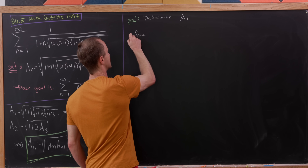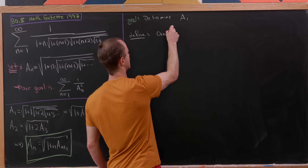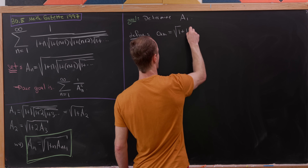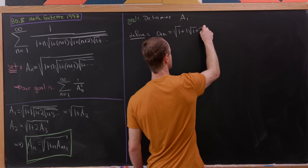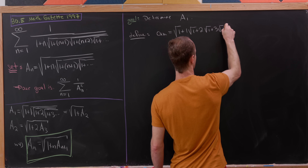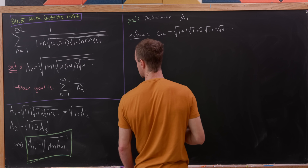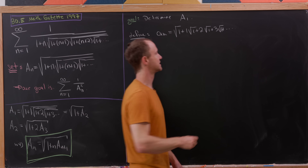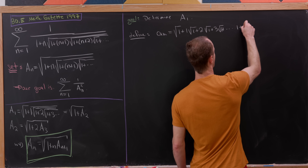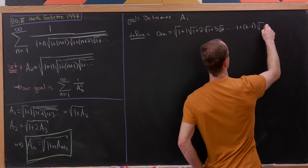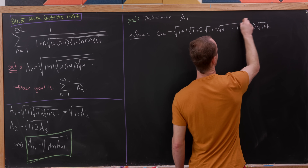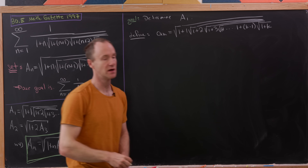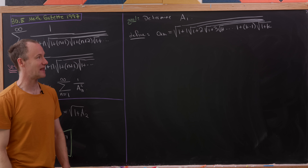Let's define this sequence — I'll call it little a sub k. It'll be the square root of 1 plus 1 times the square root of 1 plus 2 times the square root of 1 plus 3 times the square root of 1, and so forth, ending at the kth step: 1 plus k minus 1 times the square root of 1 plus k. We're truncating it at that position, so it's still nested but not infinitely nested.